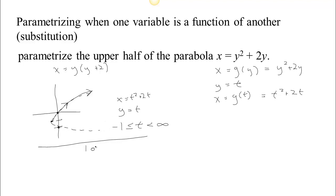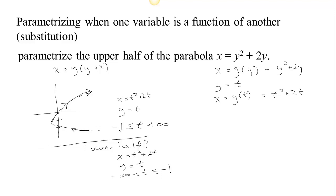Now let's think about what if the problem had asked for the lower half instead. If we let t go backwards — using values less than negative 1 — one possibility for the lower half would be: x equals t squared plus 2t, y equals t, and we let t start at negative infinity and go up until it reaches negative 1. That gives a parameterization where y is always increasing, coming in from the far distant past along the curve and reaching the vertex at time t equals negative 1.